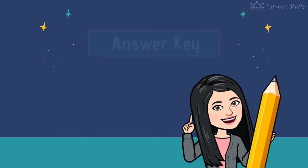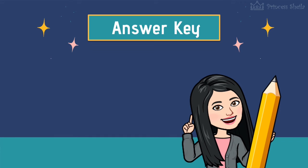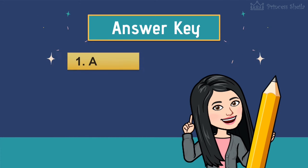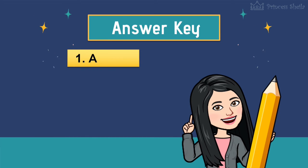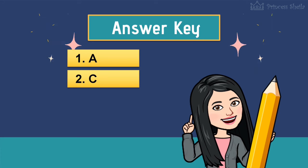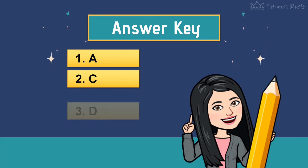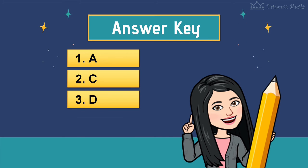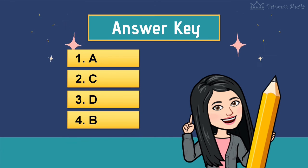Here are the answers. Number 1 is A. Number 2 is C. Number 3 is D. Number 4 is B. And number 5 is A.